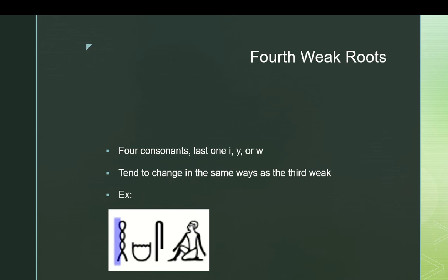You can also have fourth weak roots. Same deal, except there are four consonants. They tend to change in the same way as the third weak, where that final consonant tends to get dropped or replaced. Here's a good example. It is hmsi. It means to sit. Dotted H-M-S-I. That's almost like a bathtub thing. That's the biliteral hieroglyph for HM, and then at the very end, that's a man who is pointing his hands at the ground as the determinative for sitting.